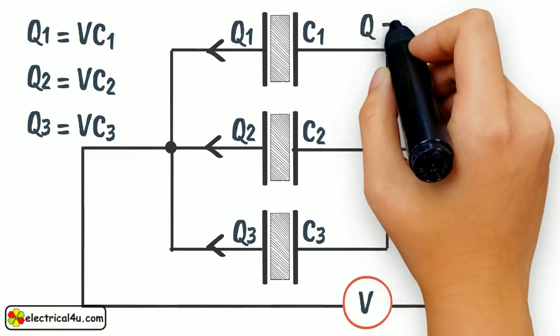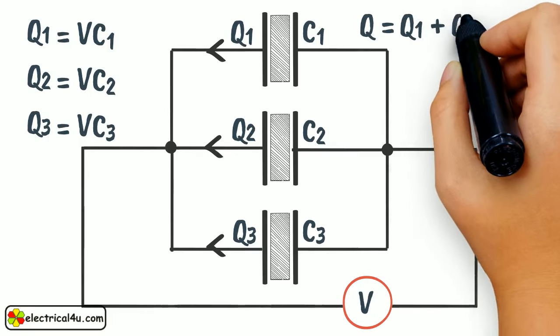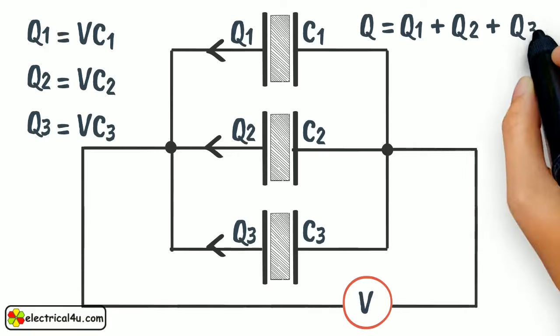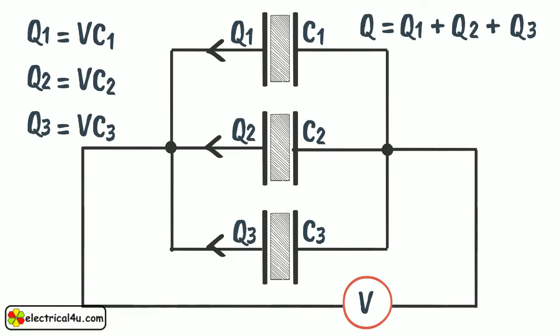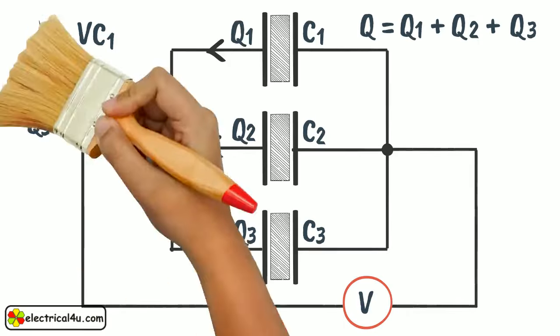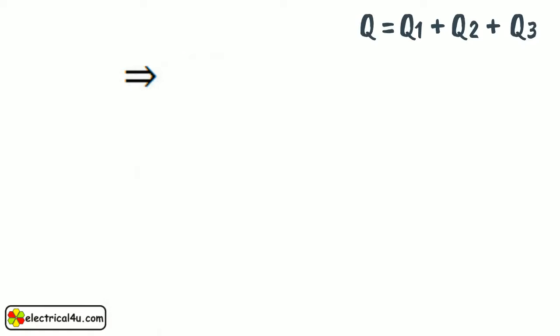Now total charge accumulated in the system will be Q equals Q1 plus Q2 plus Q3, which implies that Q equals V into C1 plus V into C2 plus V into C3.